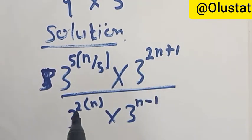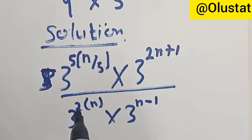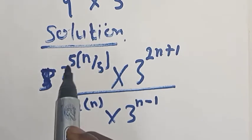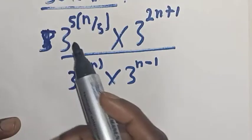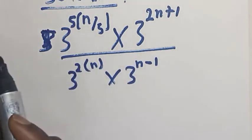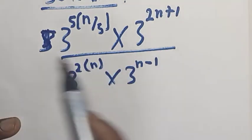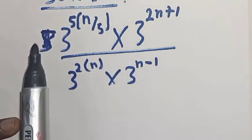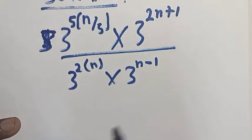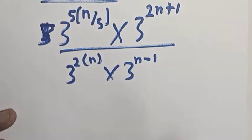In the denominator, we have 3 raised to power 2 into n, multiplied by 3 raised to power n minus 1. This is because 3 raised to power 2 is 3 squared, which equals 9 — 3 times 3 is 9. And 3 raised to power 5 means 3 multiplied in 5 places, which gives you 243. Now let's move to the next step.